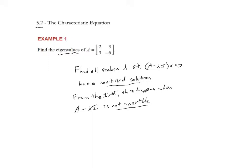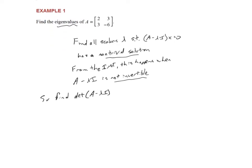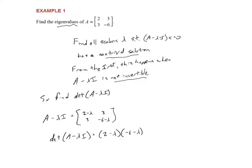The easiest way to find out if a matrix is not invertible is to find its determinant. So we find the determinant of A minus lambda times the identity. That determinant is going to give us our eigenvalues. The first thing we do is compute A minus lambda I: we just subtract lambda on the main diagonal, giving us [2 - λ, 3; 3, -6 - λ]. The determinant using AD minus BC is (2 - λ)(−6 − λ) minus 3 times 3.